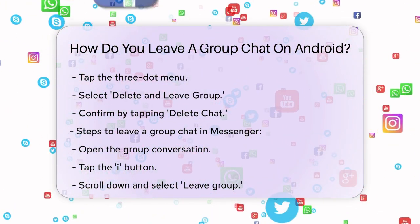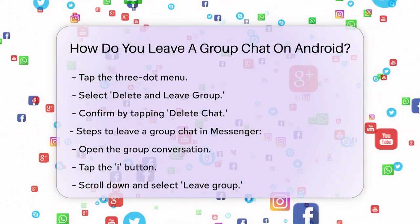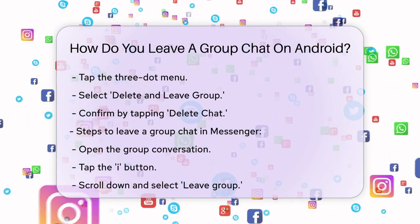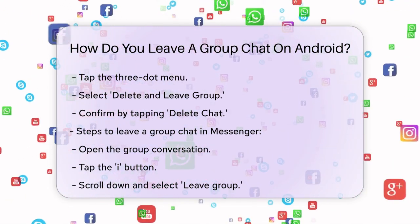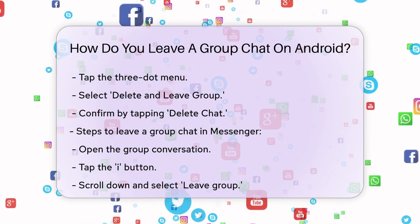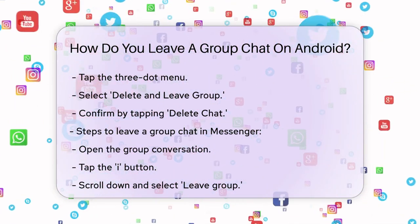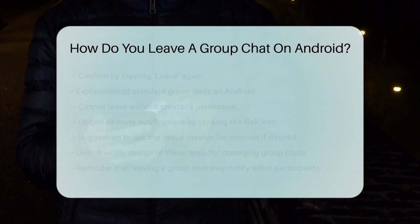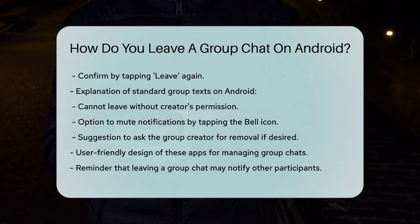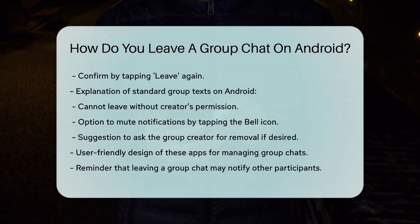If you're in a group text that wasn't created through a specific app like WhatsApp or Telegram, things get a bit tricky. On Android, you can't actually leave a standard group text without the creator's permission. However, you can mute the conversation to stop receiving notifications. To do this, open the group text, tap the three vertical dots at the top right, and then tap the bell icon to mute the conversation. If you really want to be removed, you'll need to ask the group creator to take you out.